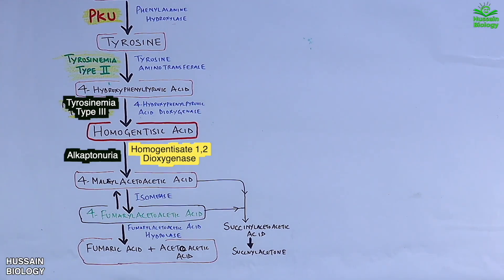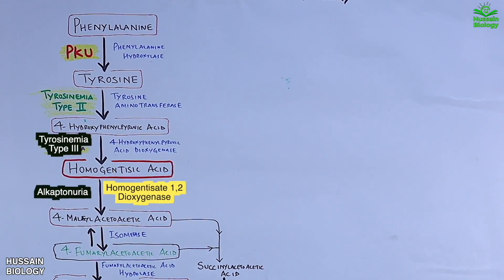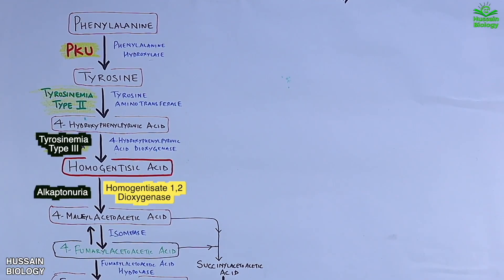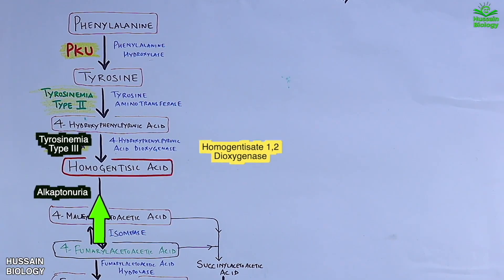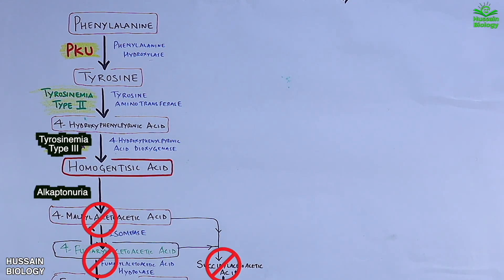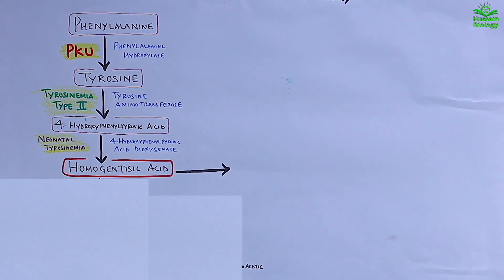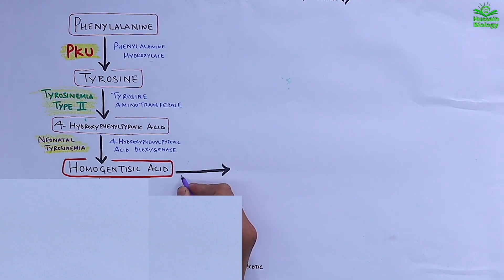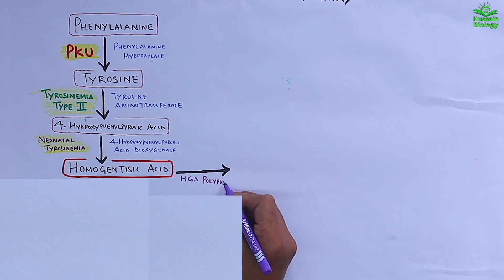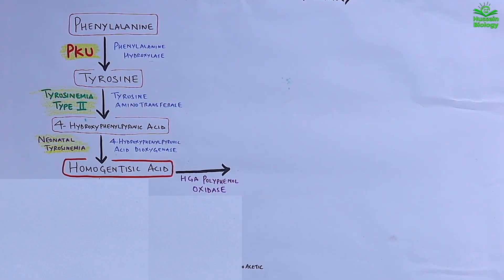In alkaptonuria, the blockage occurs here — the HGD enzyme is missing, so the pathway ceases from homogentisic acid onward. When homogentisic acid accumulates, it is acted upon by HGA polyphenol oxidase in a kind of auto-oxidation reaction, converting homogentisic acid into benzoquinone acetate.